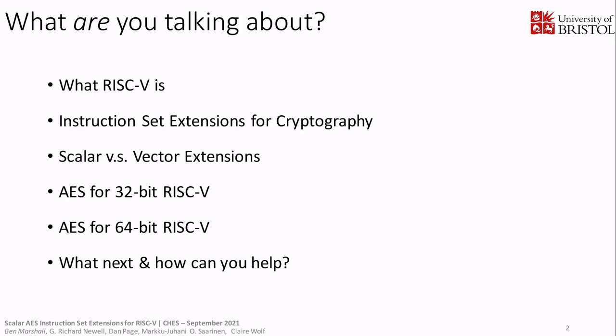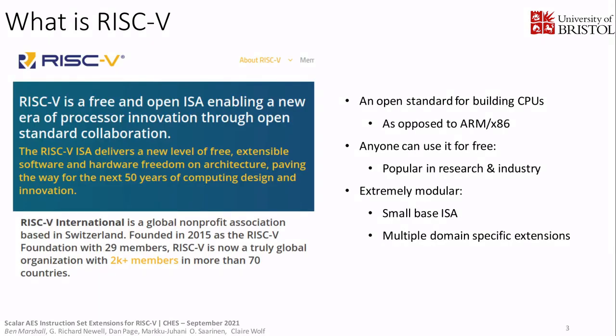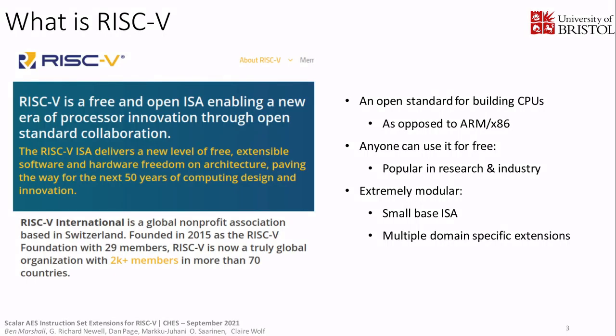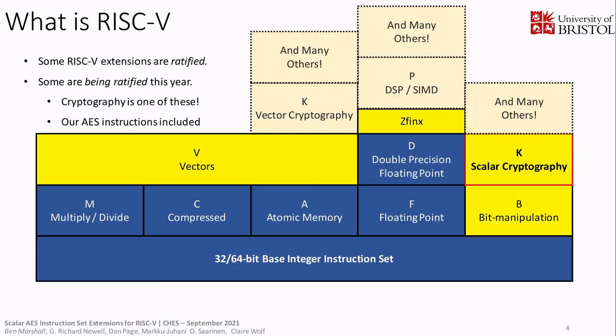Moving on to exactly what RISC-V is: in their own words, it's a free and open ISA that lets anyone pick up the specification and build a CPU or software to execute on it, as opposed to something like ARM where it either costs a lot of money to buy the chip or simply to license the design. This means anyone can use RISC-V for free, so it's very popular in research and industry, particularly for niche applications like security. The main principles of RISC-V are a very small base instruction set architecture with domain-specific extensions for particular things.